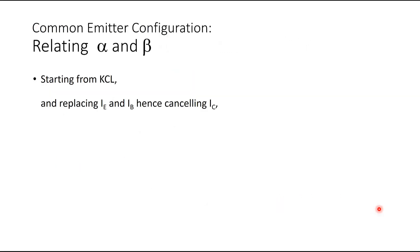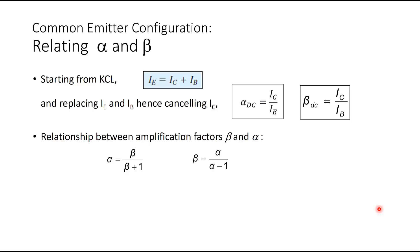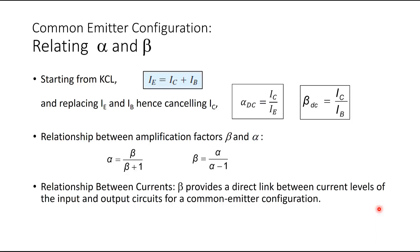To relate alpha and beta: starting from the KCL equation IE = IC + IB, and using α = IC / IE and β = IC / IB, you can derive the relationship between the amplification factors. The results are: α = β / (β + 1) and β = α / (1 − α). Furthermore, IC = β·IB links the output and input circuits, and IE = (β + 1)·IB.